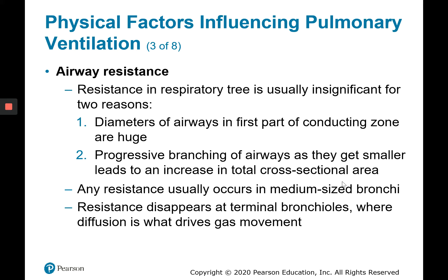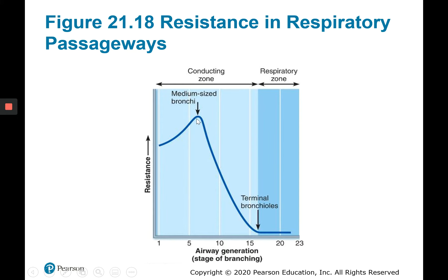This resistance, which is pretty insignificant, completely disappears at the terminal bronchioles, because we go from the conducting zone to the respiratory zone as we leave the terminal bronchioles. The respiratory bronchioles and further structures towards the alveoli are not participating in moving air from place to place — instead, the respiratory zone structures are participating in gas exchange. We have the most resistance in the medium-sized bronchi, and less resistance in the smaller bronchioles because there are so many of them.